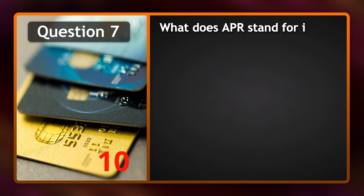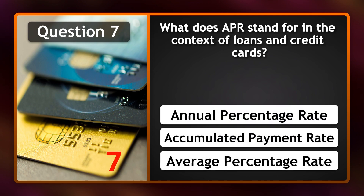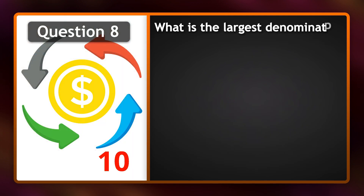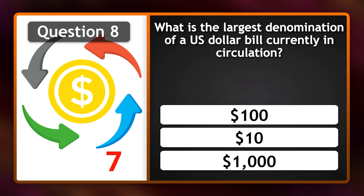What does APR stand for in the context of loans and credit cards? Annual percentage rate. What is the largest denomination of a U.S. dollar bill currently in circulation? $100.